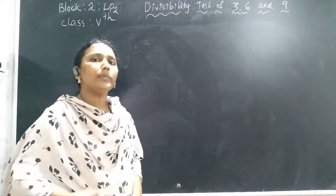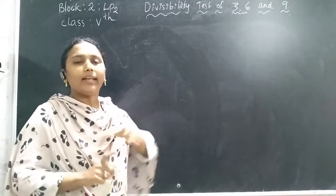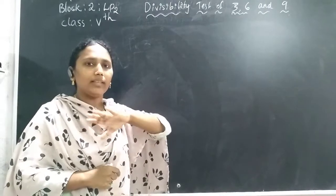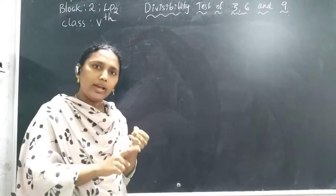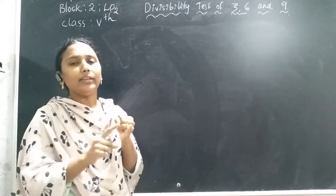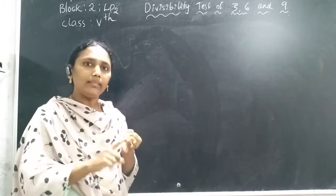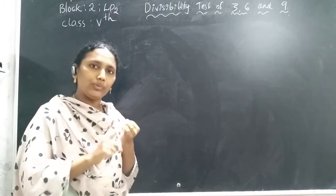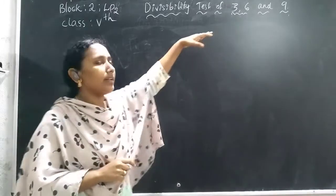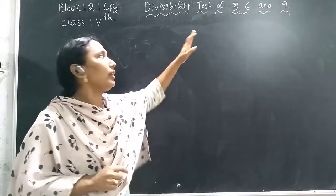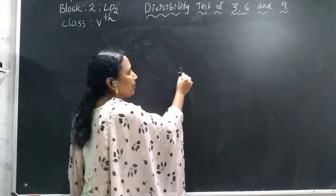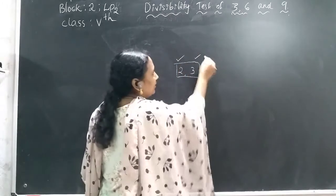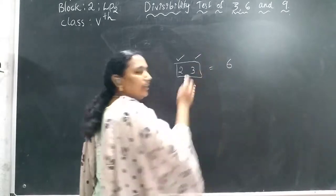Now we will look at the divisibility test for 6. A number is divisible by 6 when it is divisible by both 2 and 3. The number must be divided by both — not just one. When a number is divisible by both 2 and 3, then it is divisible by 6.